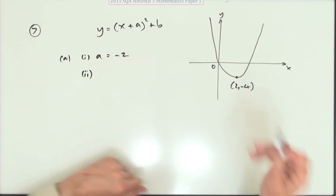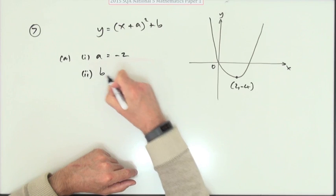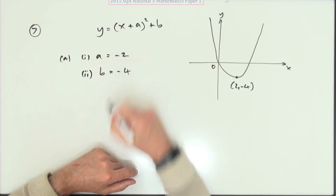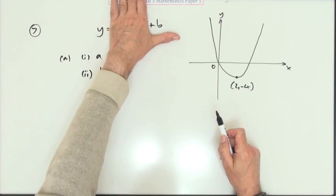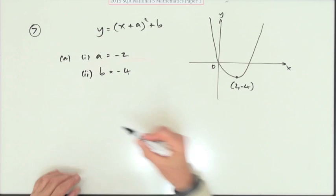You probably just remember it's the opposite, but b is simply what it says there. b is negative 4. The lowest y can be is negative 4 when the bracket comes to 0. That's two marks.